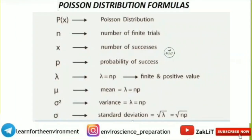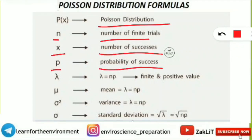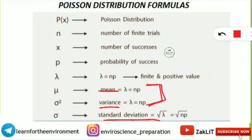The next concept is from the Poisson distribution formula — asked in assertion-and-reasoning questions as well as numerical form. In Poisson distribution: P(X, N), where N = number of finite trials, X = number of successes, and P = probability of success. Lambda (λ) = NP, which is a finite positive value representing the mean. Importantly, in Poisson distribution, mean equals variance (λ = NP), and the standard deviation equals the square root of the variance (or mean).